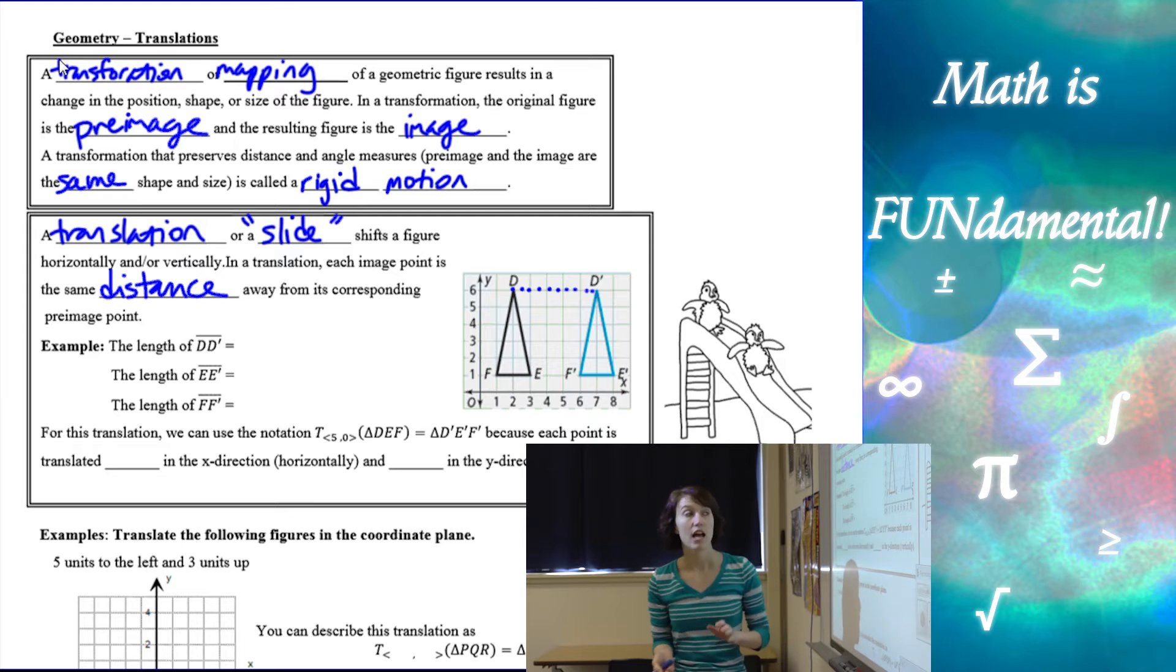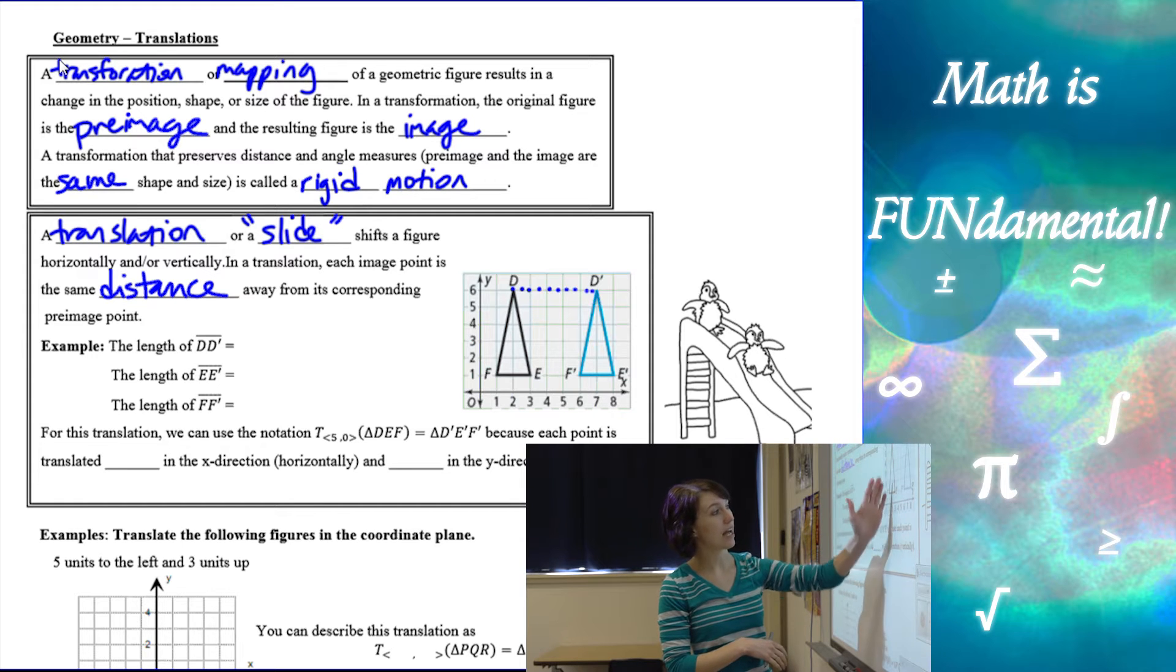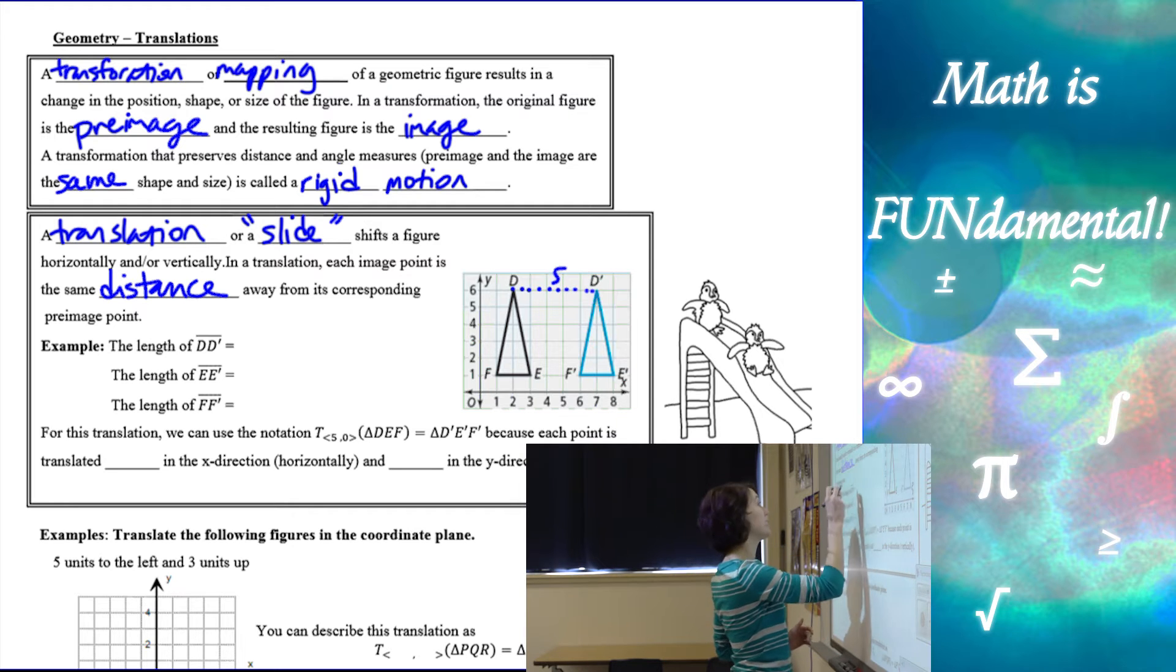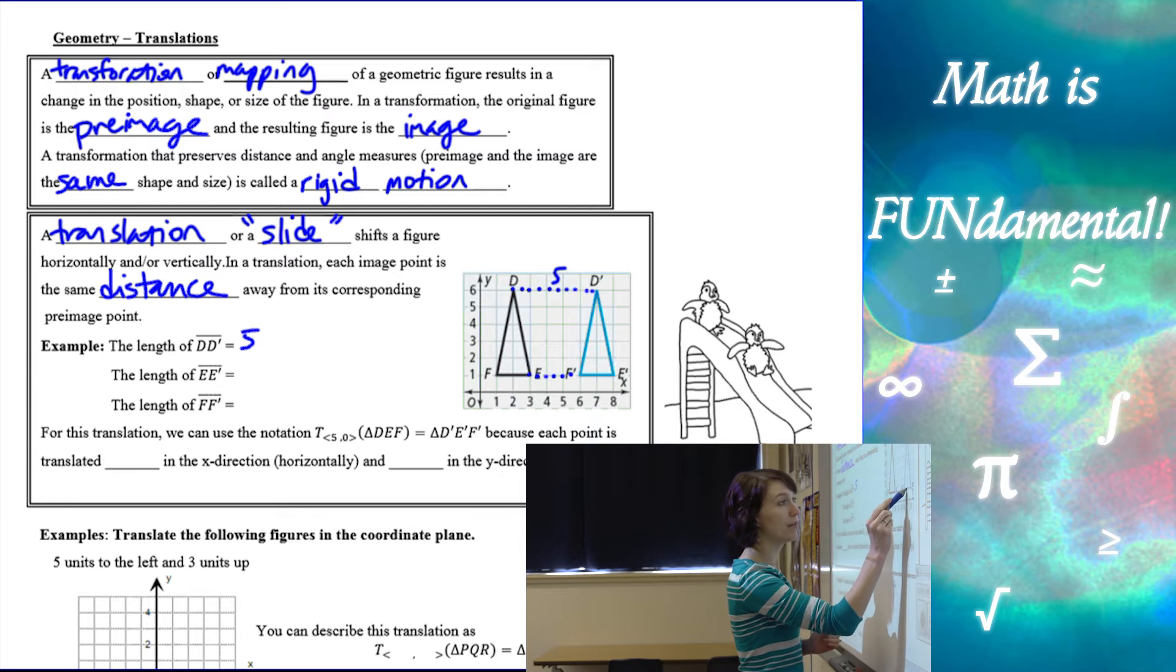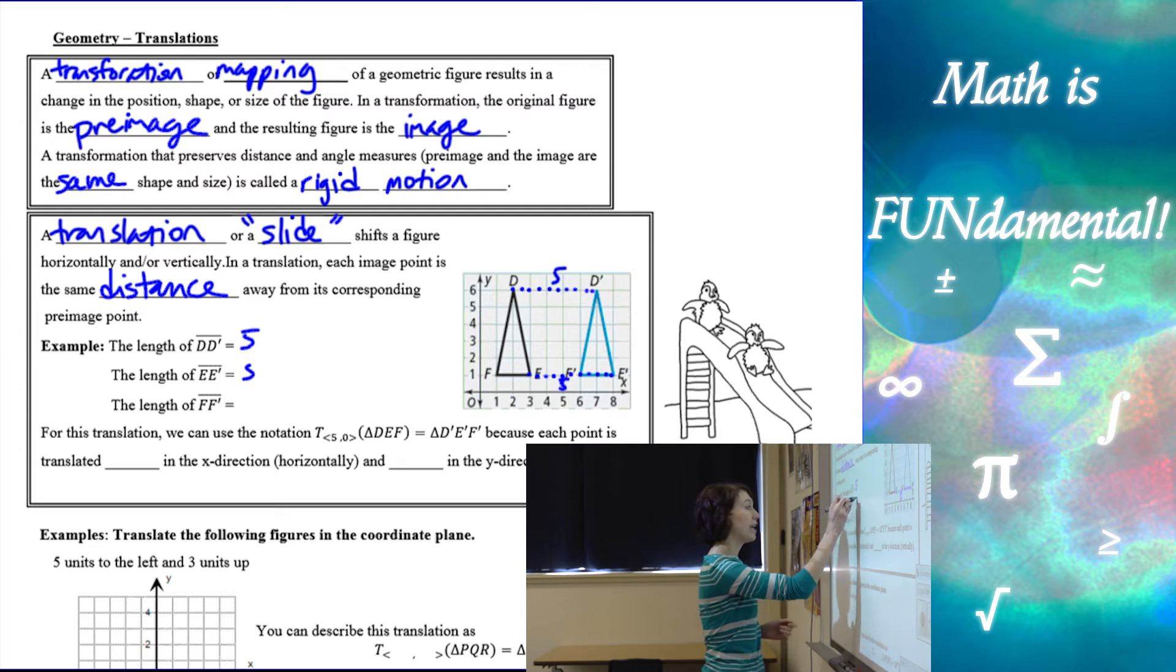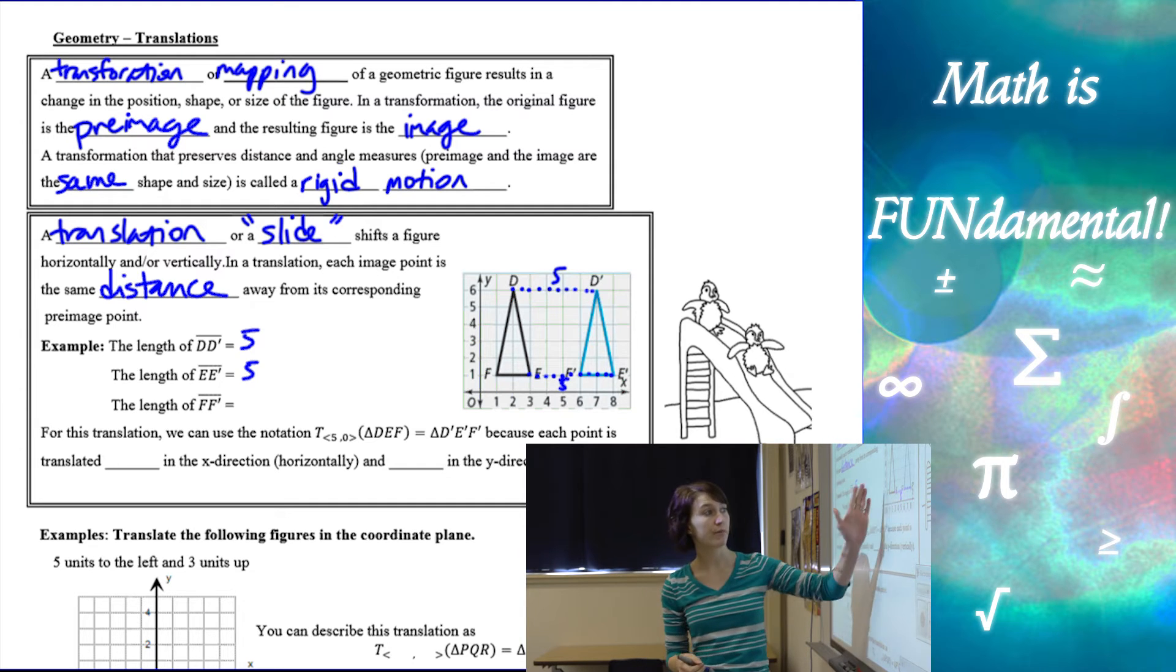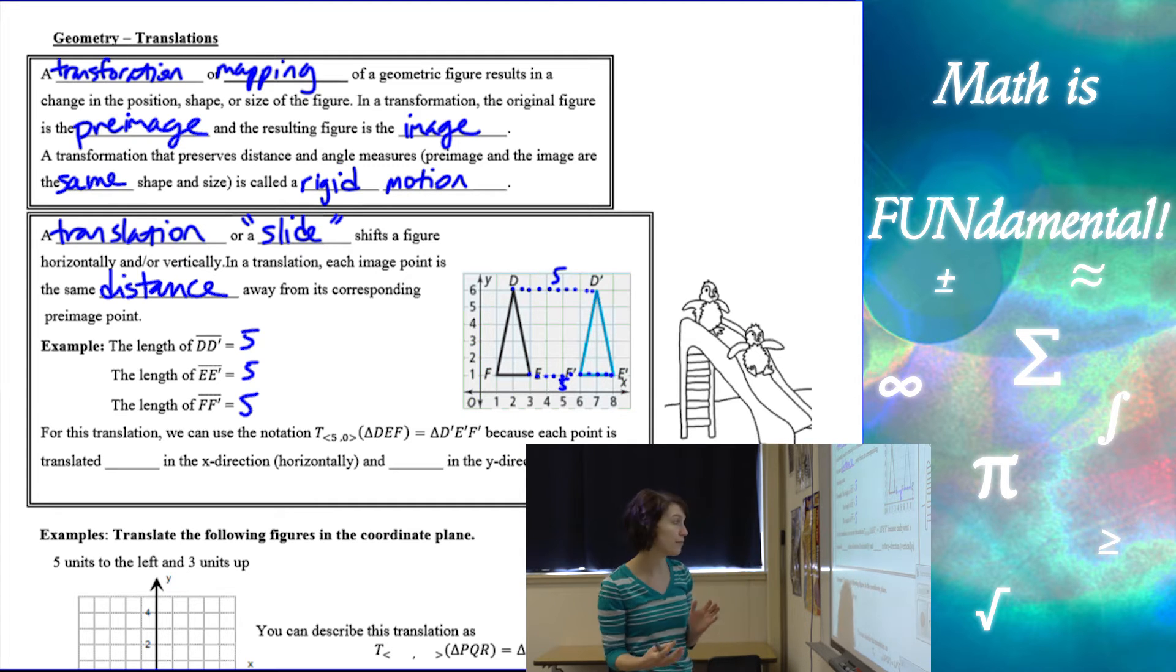We can find the distances between our pre-image points and our image points. So here, D was horizontally at x equals 2, and it moved over to x is 7, so this is a distance of 5. If we look at from E to E prime, that's going to go from 3 to 8, which is also 5. And from F to F prime goes from 1 to 6, which is also 5. So here in a translation, you can see that we moved all the points of our figure over in the same amount in the same direction.